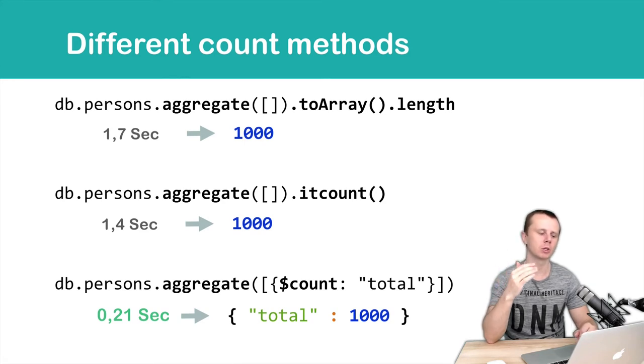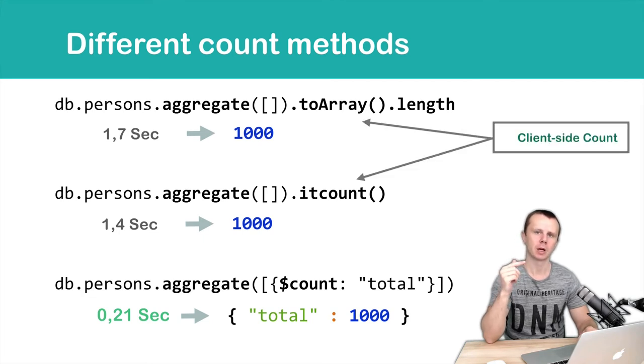What is the difference between those three methods? Why do the first two take so long and the last one is so quick? The answer is simple. The first two methods are client-side methods, and in those cases we iterate through the cursor till the end on the client side. That's why it takes so long.